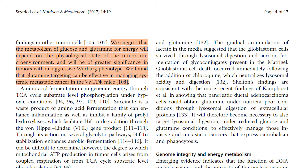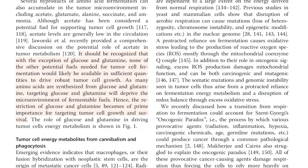We found that glutamine targeting can be effective in managing systemic metastatic cancer in the VM-DK mice. It should be recognized that with the exception of glucose and glutamine, none of the other potential fuels needed for tumor cell fermentation would likely be available in sufficient quantities to drive robust tumor cell growth. As many amino acids are synthesized from glucose and glutamine, targeting glucose and glutamine will deprive the microenvironment of fermentable fuels. Hence, the restriction of glucose and glutamine becomes of prime importance for targeting tumor cell growth and survival.